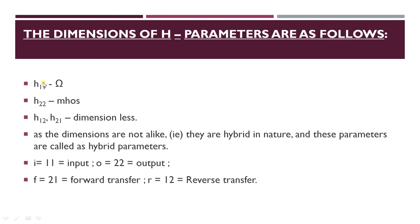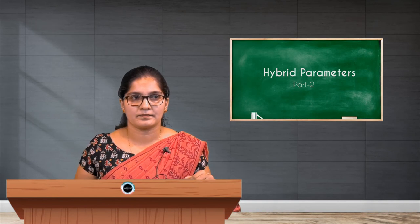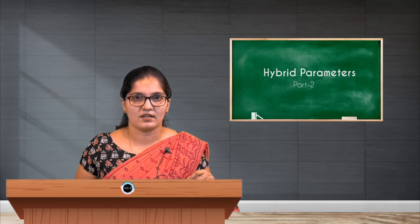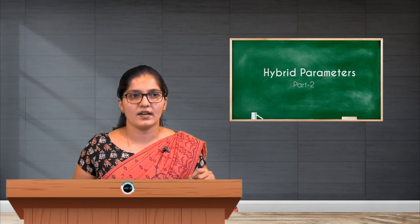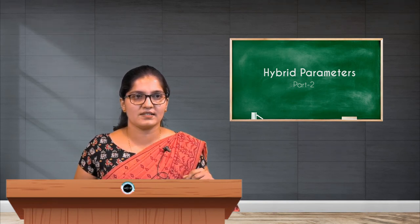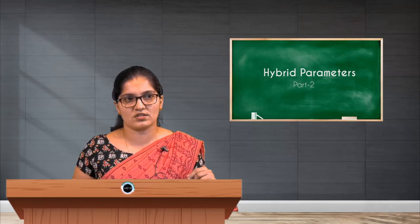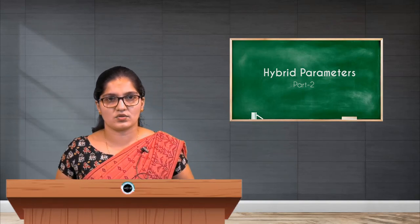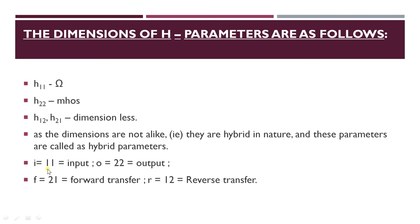The first H parameter H11 has the unit ohm, which is impedance. H12 and H21 are dimensionless. H22 has the dimension of admittance, which is mho. The subscript notation: 'I' represents input, 'O' represents output, 'F' represents forward transfer, and 'R' represents reverse transfer.